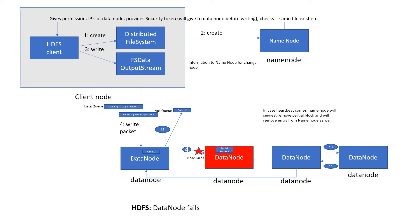The packet that is partially loaded or not able to be written — that information will be passed to the output stream. The output stream will make sure communication goes to the name node, saying it needs another data node because a failure happened. It will inform the name node, and the name node will assign a change node. Then that packet will be sent back to the data queue, which will route it to the available data node, and the data where it was written will communicate to the third data node.